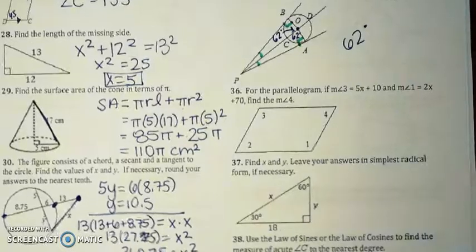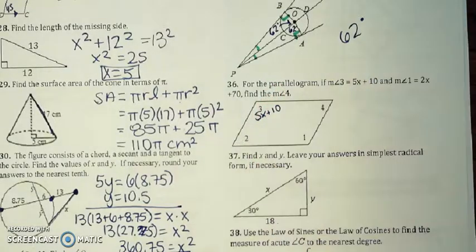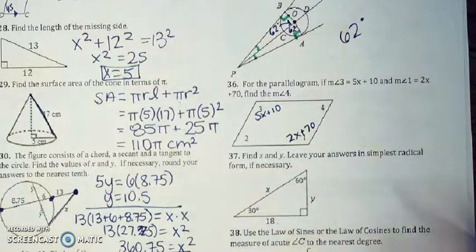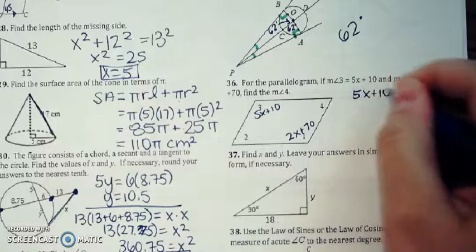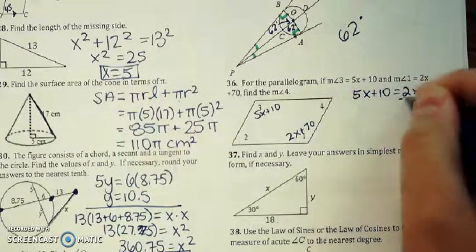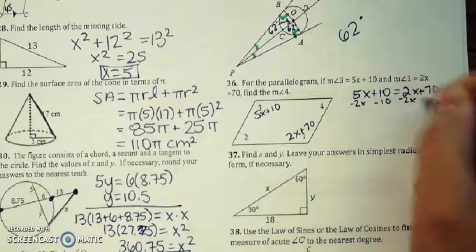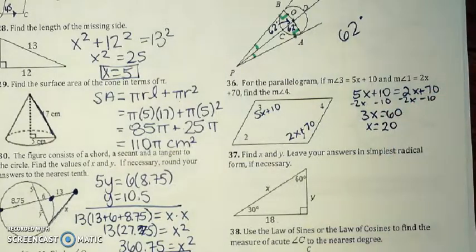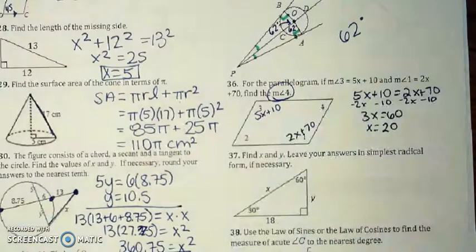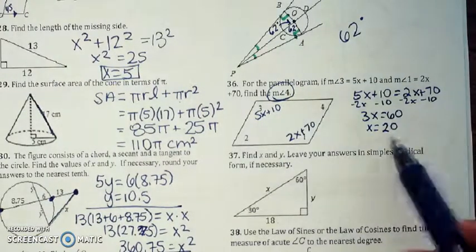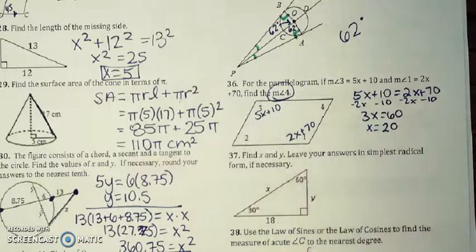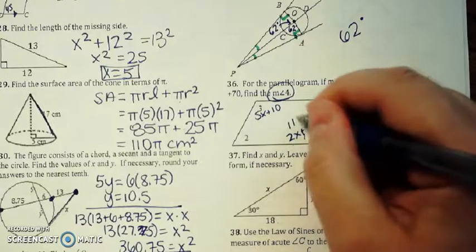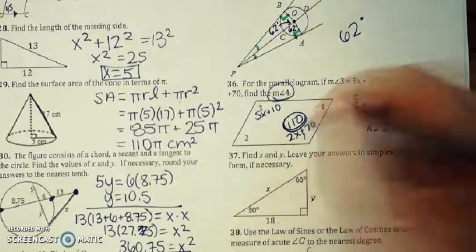36. If a parallelogram here, we have 5x plus 10, and angle 1 is 2x plus 70. Parallelogram opposite angles are congruent, so I'm going to set these equal. I'm going to do two steps in one here. I'm going to subtract 2x from both sides, and I'm going to subtract 10 in the same step. So we're going to get 3x is equal to 60. x is going to be 20. Now the question says find the measure of angle 4. You're going to have to do two things here. We're going to have to plug this back in. So either one of these angles, it doesn't matter. Let me just plug it in right here. So 2 times 20 is 40 plus 70 would make this angle 110 degrees.